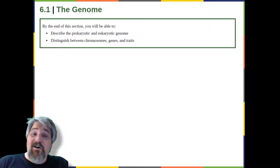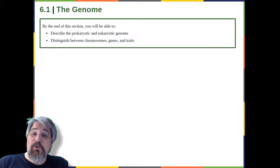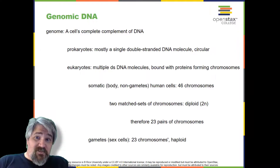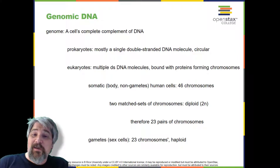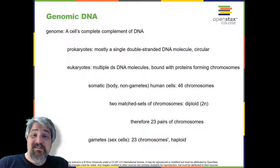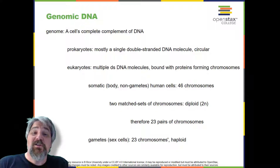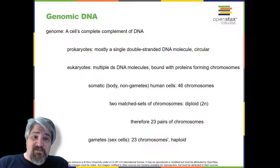The mechanisms involved in the cell cycle are highly conserved across eukaryotes. Organisms as diverse as protists, plants, and animals employ similar steps. Before discussing these steps a cell undertakes to replicate, a deeper understanding of the structure and function of a cell's genetic information is necessary. A cell's complete complement of DNA is called its genome. In prokaryotes, the genome is composed of a single, double-stranded DNA molecule in the form of a loop or circle. The region in the cell containing this genetic material is called a nucleoid.